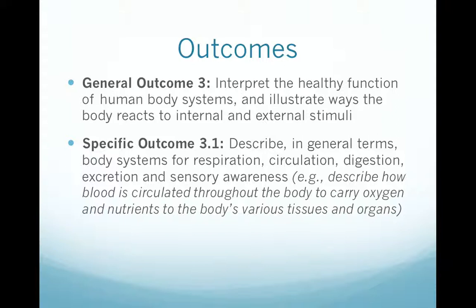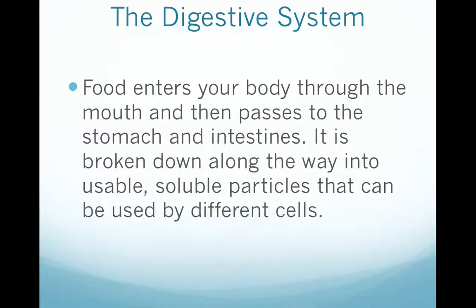An example of this is describing how blood is circulated throughout the body to carry oxygen and nutrients to the body's various tissues and organs. We're going to talk about four different organ systems. I'll show you some diagrams and explain them, and we'll show how they connect — especially the respiratory system and the circulatory system, what the purpose of exhaling carbon dioxide and inhaling oxygen is.